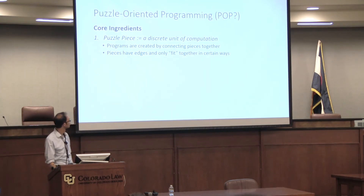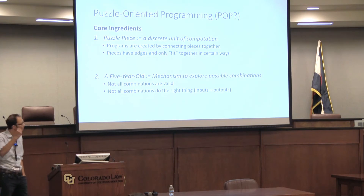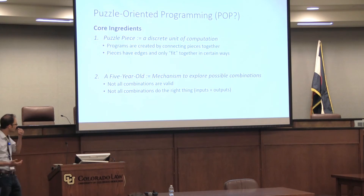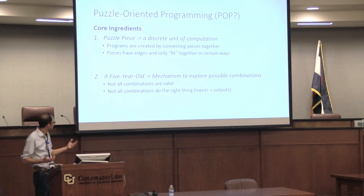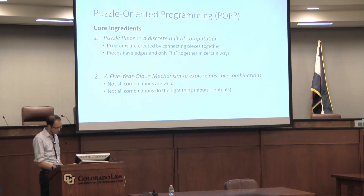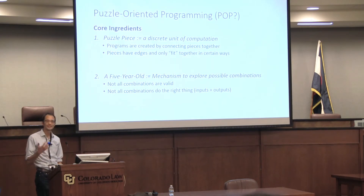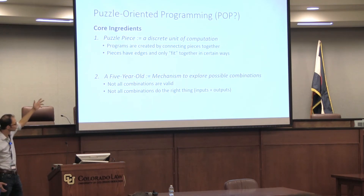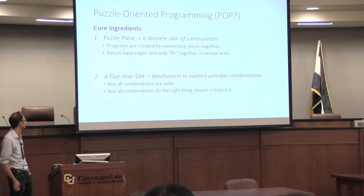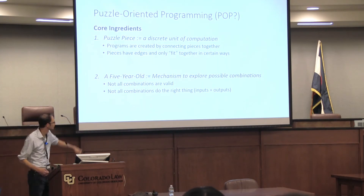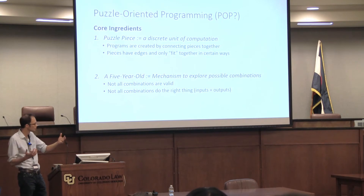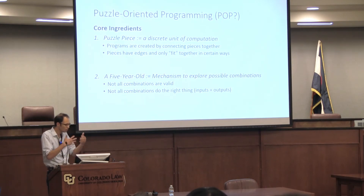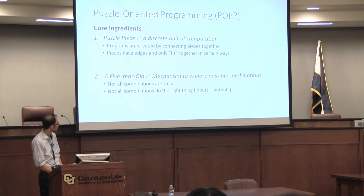The other core piece you need for puzzle-oriented programming is a five-year-old — essentially a metaphor for a mechanism that can explore different combinations. Not all combinations are valid, and not all combinations do the right things. You need something with the right inputs and outputs. How would we do something like this in Haskell? There's a mix of what's clearly type-level programming — pieces fitting together, type safety — and something that feels like logic programming: a space of different possibilities with constraints for what pieces work and what don't.